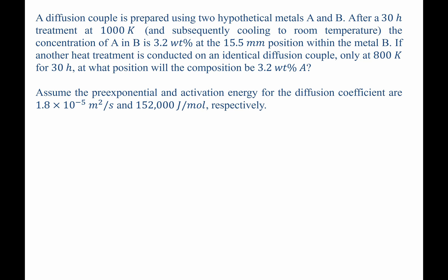A diffusion couple is prepared using two hypothetical metals A and B. After a 30-hour heat treatment at 1000 K and subsequent cooling to room temperature, the concentration of A in B is 3.2 weight percent at the 15.5 millimeter position within the metal B.